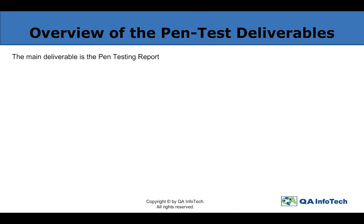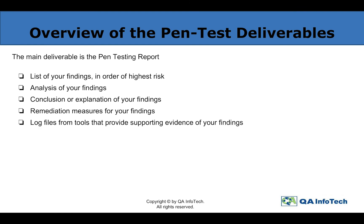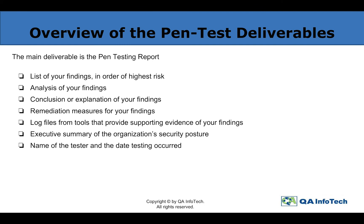Now since we are done with the phases of penetration testing, let's take a look at the overview of pen test deliverables. The main deliverable is a pen test report, also known as an execution report or technical report. It must include the list of findings in order of highest risk, analysis of findings, conclusion or explanation of findings with log files, screenshots and evidence. It must also include mitigation or remediation measures for the findings, as well as log files from automated tools that provide supporting evidence. It must include an executive summary of the organization's security posture, the name of the tester or engineer, and the date testing occurred. It is also recommended to include any positive findings or good security implementations.